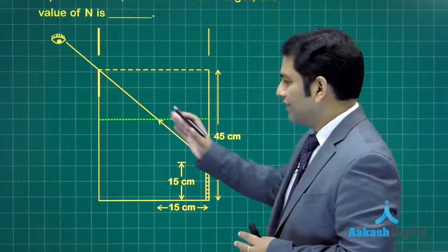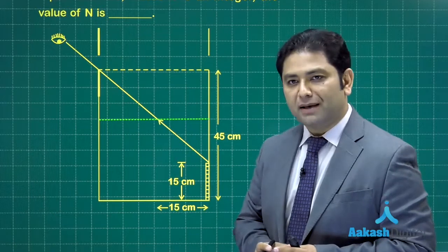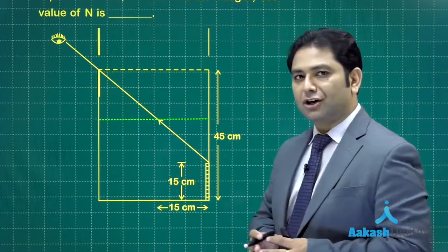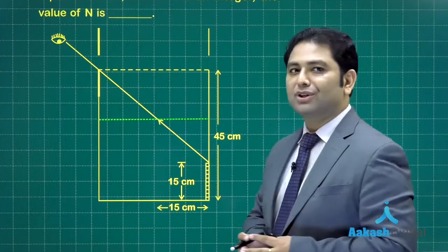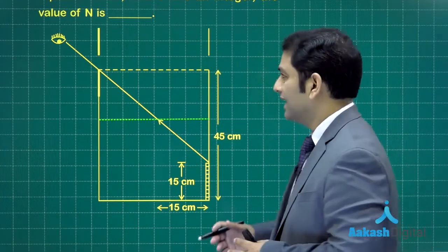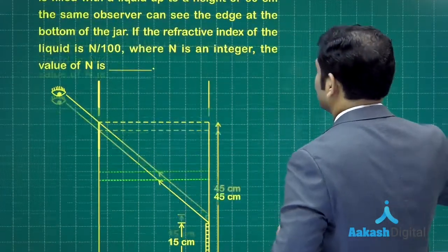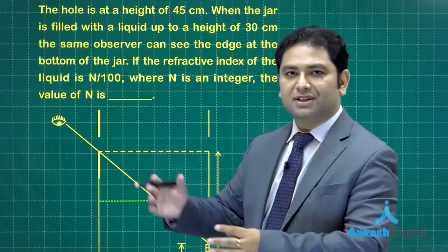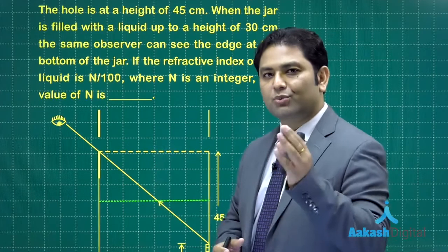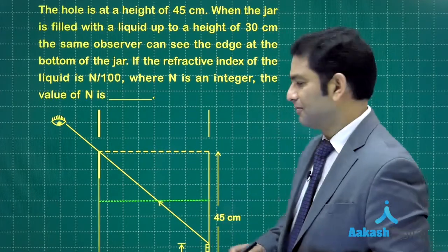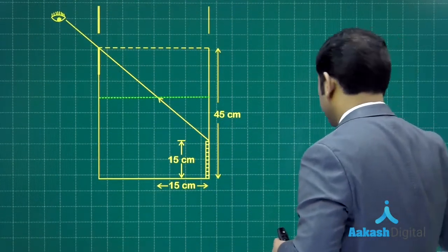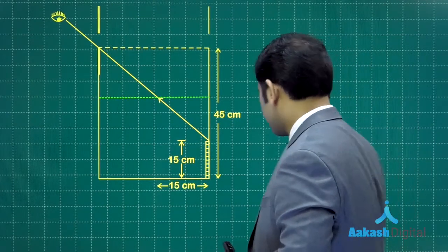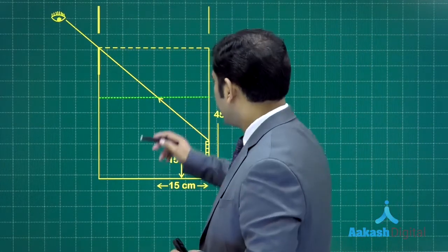Obviously because of refraction, the observer will not be able to visualize the top. In this we need to compute the value of refractive index. The refractive index is to be reported in terms of n by 100, so we need to calculate the value of n.